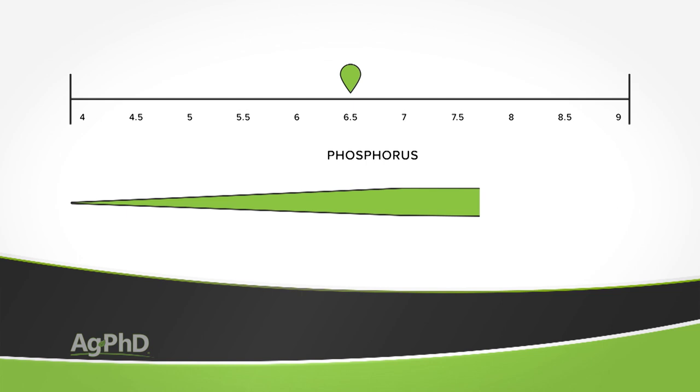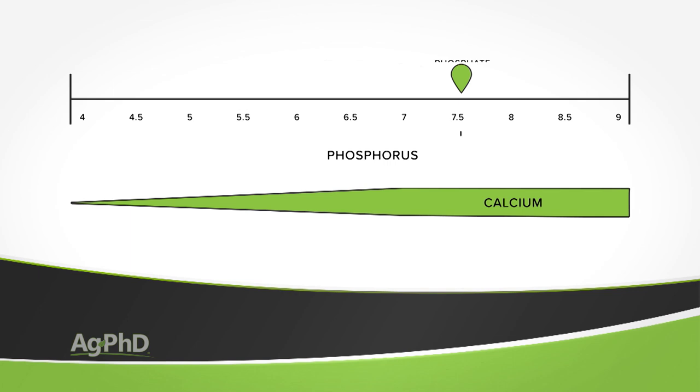Do you see a correlation between soil pH and potential nutrient tie-up? Let me give you a very specific example with one of the primary nutrients — phosphorus. Phosphorus is usually in the phosphate form, and in high pH soils there's typically excess calcium. Calcium can bind with phosphate to form calcium phosphate, which is insoluble in water. When it doesn't dissolve in water, the plant can't bring it in — it's not in a form the plant can use.